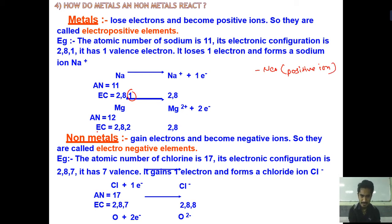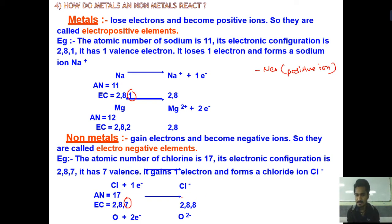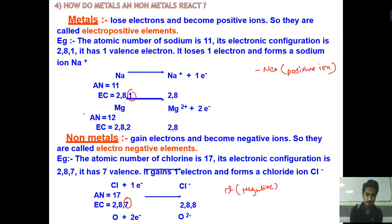Similarly, for non-metals — chlorine has seven electrons in its last orbit, so it will accept one electron, which is why it forms a negative ion. So metals can also be called electropositive elements, and non-metals can be called electronegative elements.